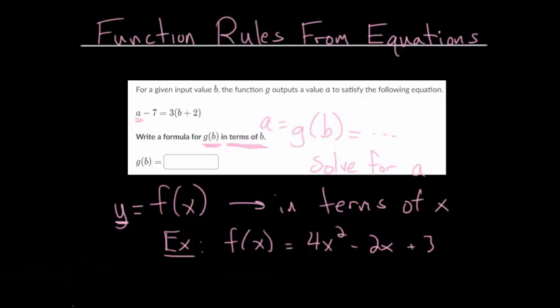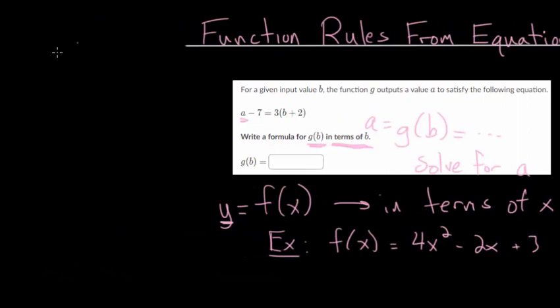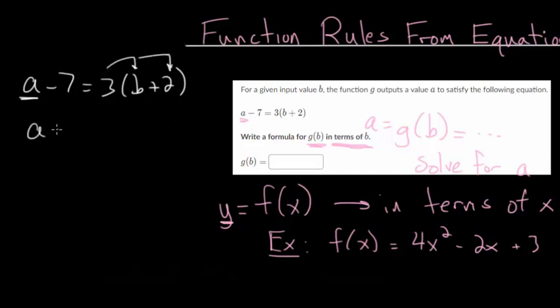Let's start with this problem. We have a - 7 = 3(b + 2). Since we're solving it for a, we want to move everything that's not a to the other side. We can also distribute here so we can combine like terms. So we have a - 7 = 3b + 6. Let's add 7 to each side so that a = 3b + 13.